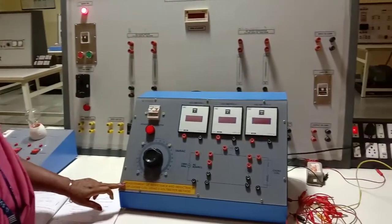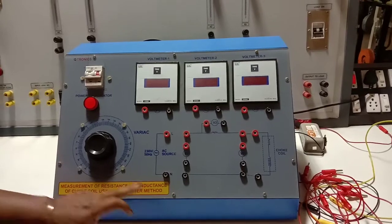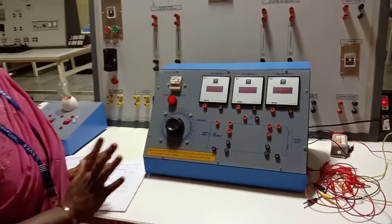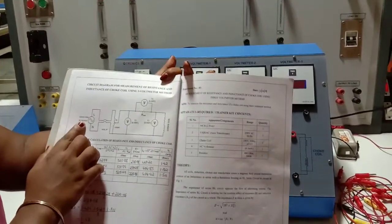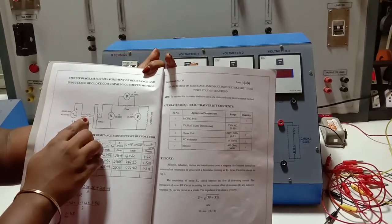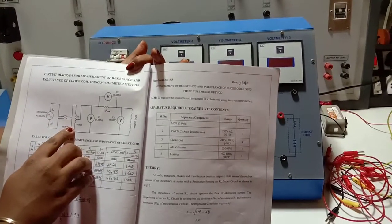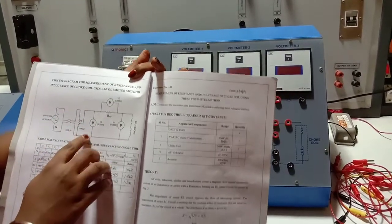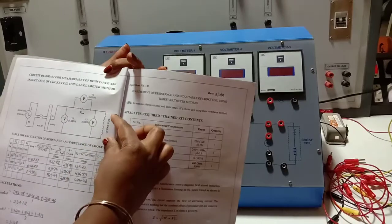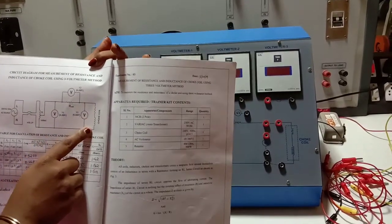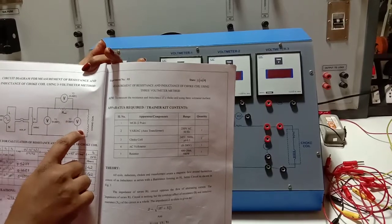This is the kit. You can see here the title is given: measurement of resistance and inductance of choke coil using three voltmeter method. First I will tell you what are all the components present in the kit. The combination of R and L, we call it as choke coil.